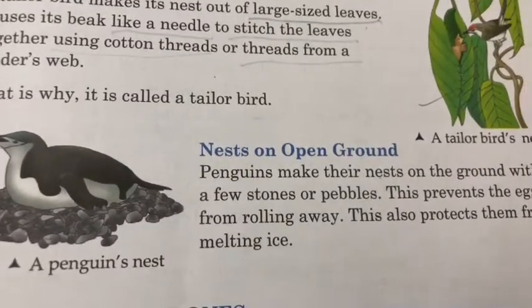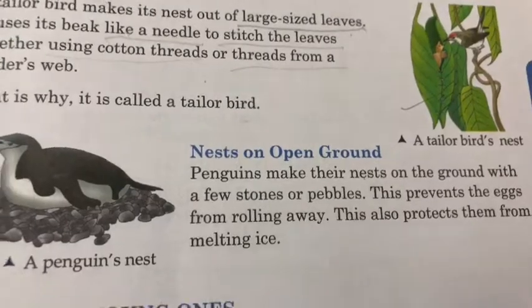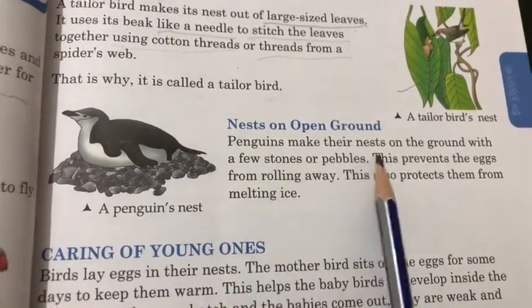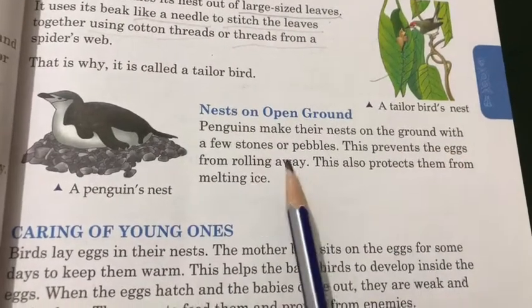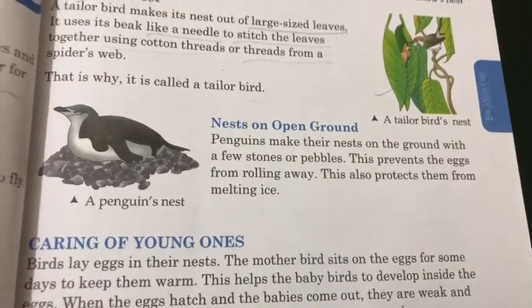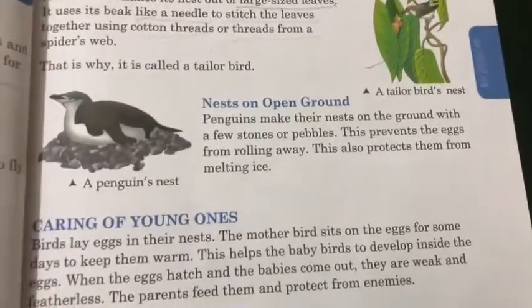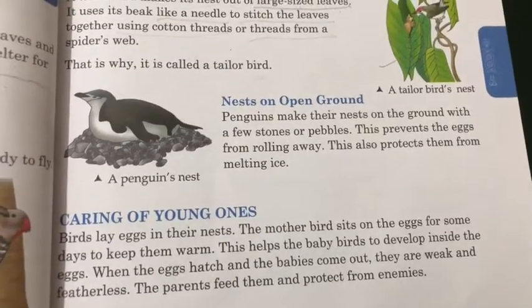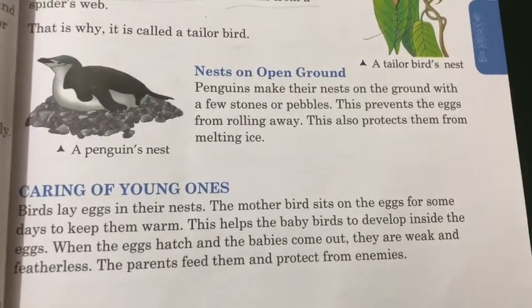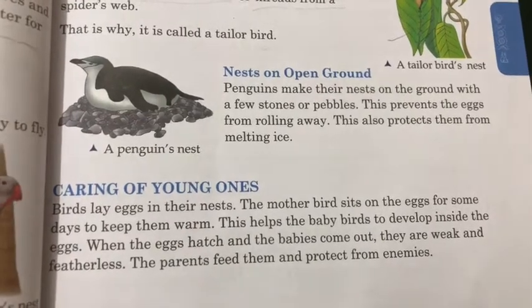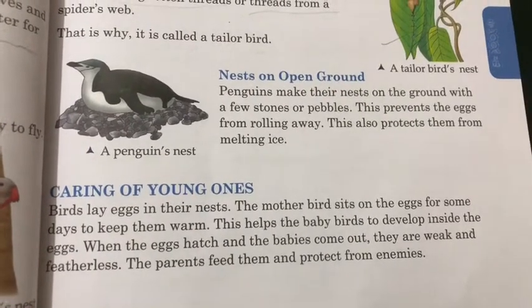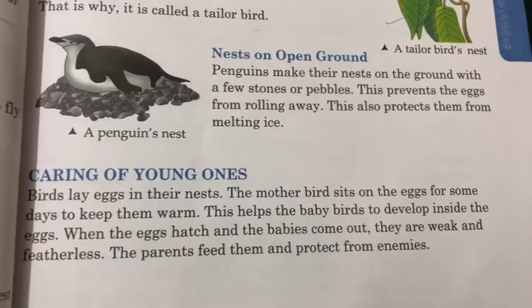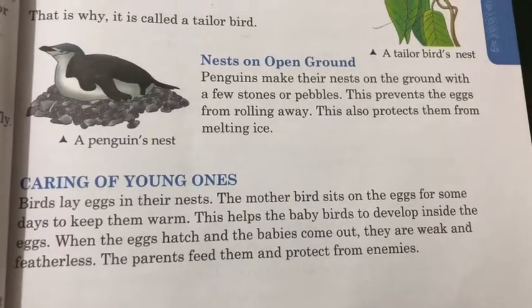Some birds make their nest on the ground with a few stones and pebbles. These stones prevent the eggs from rolling away and protect the eggs.